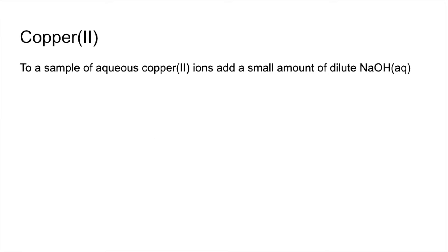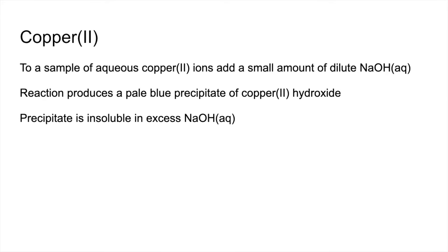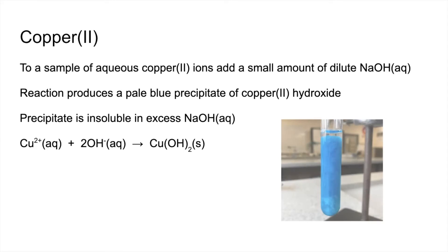Copper-2 now. To your sample of aqueous copper-2 ions, add a small amount of dilute aqueous NaOH. The reaction produces a pale blue precipitate of copper-2 hydroxide, which is insoluble in excess sodium hydroxide. Here's the equation and photos taken of the actual result.